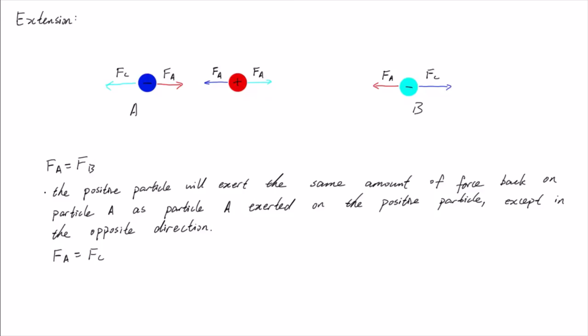So for part B, the charge that the positive particle has, which would keep particle A stationary, would also keep particle B stationary.